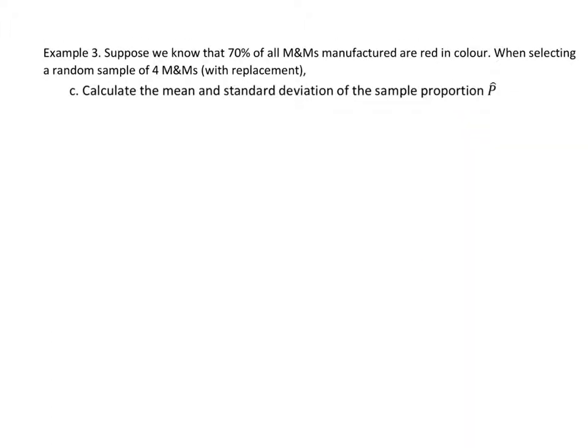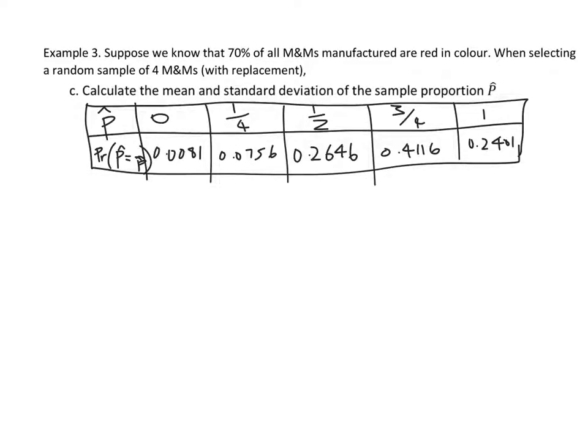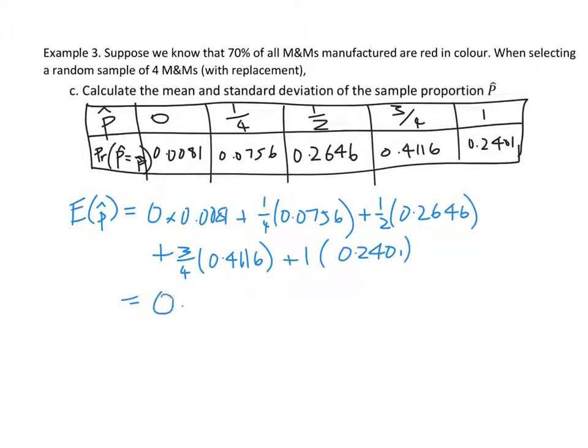So now we are asked to find the mean and standard deviation. So what you need to do is pull out your table again. And so then to calculate the mean, you would multiply the vertical columns together and add them up. So here's what I'd write in. And this works out to be 0.7, which I'm kind of kicking myself because that's the expected value of p anyway. Duh, p hat.